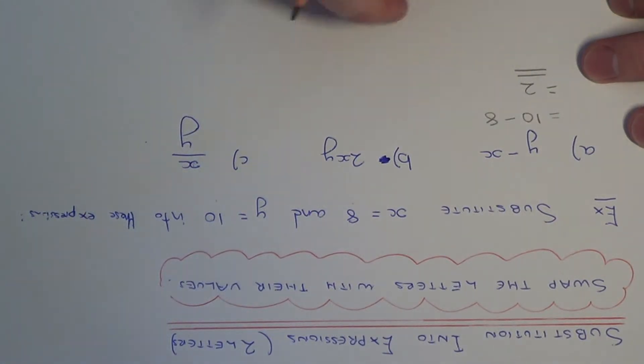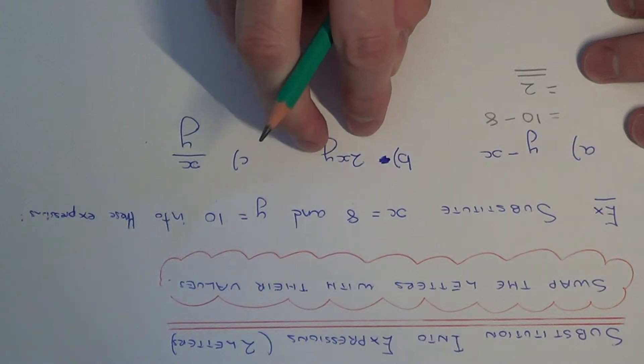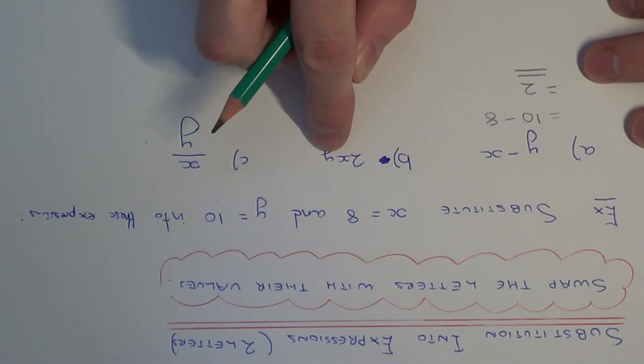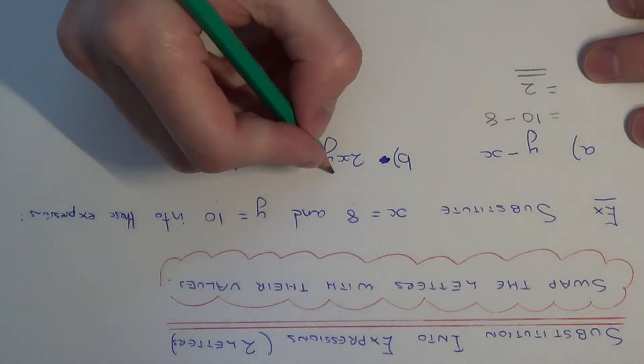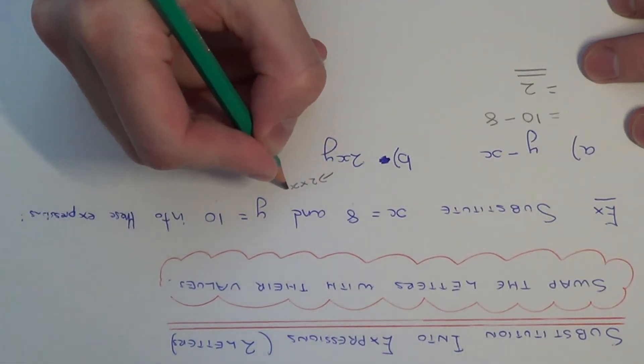Let's move on to example b. This time we have 2xy. Now when you have numbers and letters together, this means we are multiplying. So this means 2 times x times y.